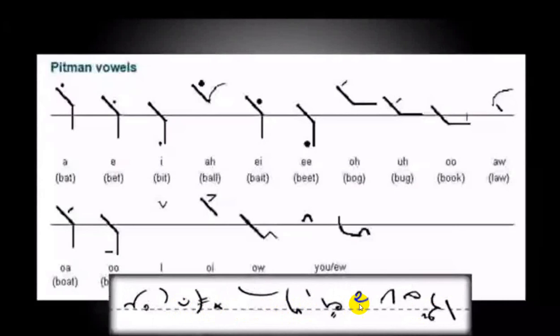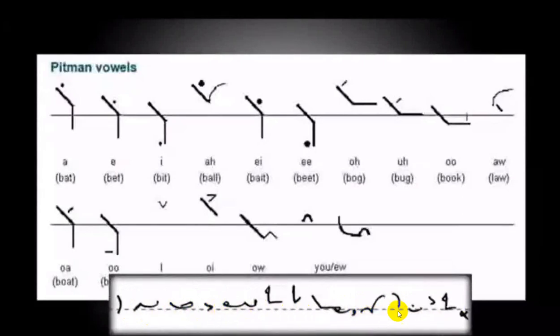Another feature of Pitman's shorthand allowed most vowels to be omitted in order to speed up the process of writing. As mentioned above, each vowel was written next to the consonant stroke at the beginning, middle, or end of the stroke.